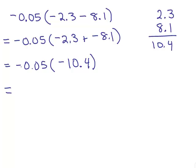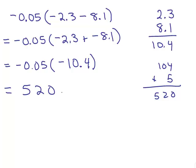Next step: we're multiplying a negative times a negative, so our answer is going to be positive — I'm just not going to write a sign. We ignore the decimals: 5 times 104 is 520. But where does the decimal really go? You've got two places after the decimal point in one number and one after in the other, so three total places. Going in three places, we don't need the extra zero at the end. The answer is 0.52.